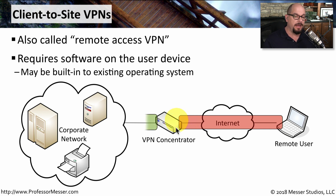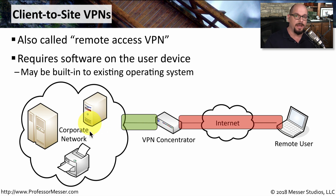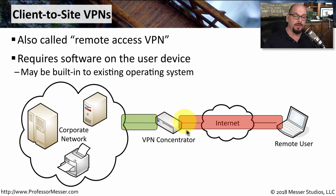Once data hits the VPN concentrator, it is decrypted and provided in the clear over to the corporate network. When information is sent back to the user from the corporate network, it hits the VPN concentrator, is again encrypted across the internet, and then decrypted at the remote user's workstation.